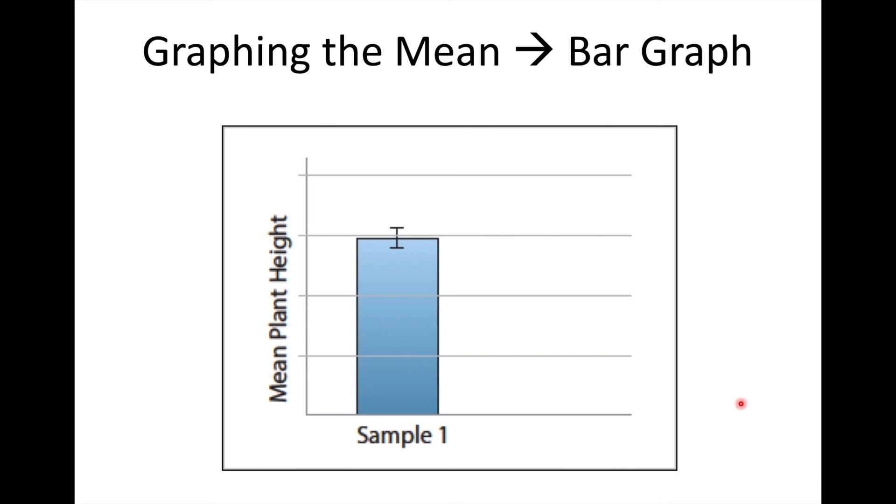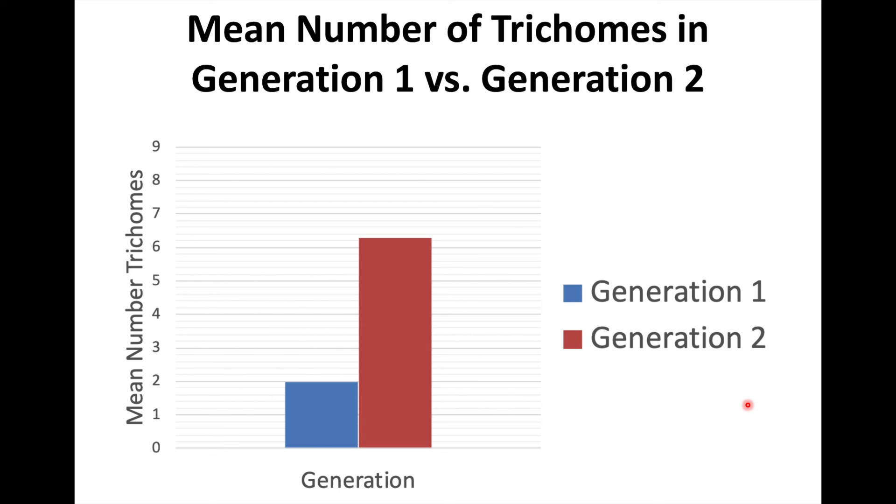For our particular lab, you can graph the mean. Usually you graph it as a bar graph. That's really helpful to see, really easy to compare two different categories. So this is a graph showing for the 2019 data, the mean number of trichomes for generation one versus generation two. Generation one is in blue and generation two is in red. What you can see right away from this representation of the data is that the blue bar is a lot lower looking than the red bar. From this graph alone, you might draw conclusions saying the mean number of trichomes increased from generation one to generation two.